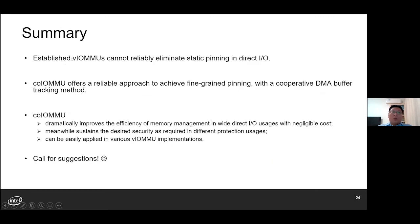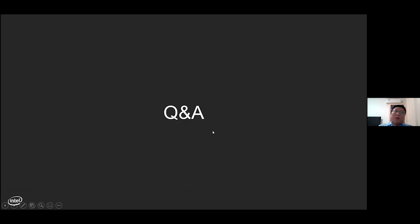In summary, current VLMMUs cannot reliably eliminate static pinning in DirectIO. Co-IOMMU can offer a reliable approach to achieve fine-grained pinning with cooperative DMA buffer tracking. It dramatically improves the efficiency of memory management with negligible costs. Meanwhile, it sustains the desired security requirements in different protection scenarios, and it can easily be applied in various VLMMU implementations. Of course, Co-IOMMU is not perfect, so any comments and suggestions are welcome. That's all for this presentation — please feel free to raise your comments, and you can also mail us for any questions about Co-IOMMU. Thank you, everyone.